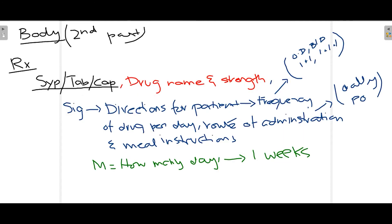The first part of the prescription — name and details of the patient and the doctor — is pretty straightforward, so we'll move on to the second part, which is the main body. First we write down Rx, meaning recipe — the treatment being written for the patient. Then we mention whether the medicine is a syrup, tablet, or capsule. This is the first thing to mention, followed by the name of the drug and its strength. Strength basically means how many mg or grams of the drug should be given to the patient.